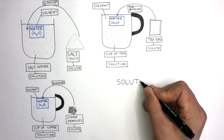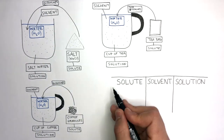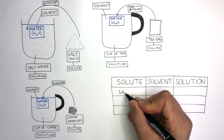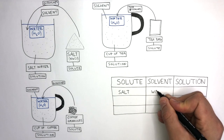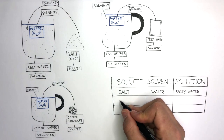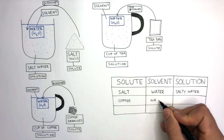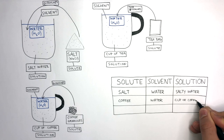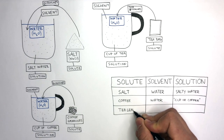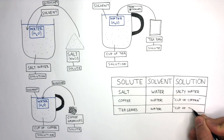To summarize, we're going to make a small table to outline which is the solute, solvent and solution in each example. In the salt water example, the solute is the salt, the solvent is the water, and the solution is the salt water. In the cup of coffee example, the solute is the coffee granules, the solvent is the water, and the solution is the cup of coffee itself. In the cup of tea example, the tea leaves are the solute, the water is the solvent, and the solution is the cup of tea itself.